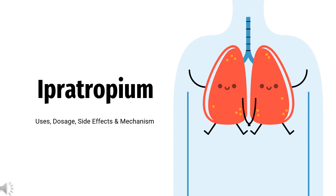Ipertropium is an anticholinergic drug used in the control of symptoms related to bronchospasm in chronic obstructive pulmonary disease, COPD.